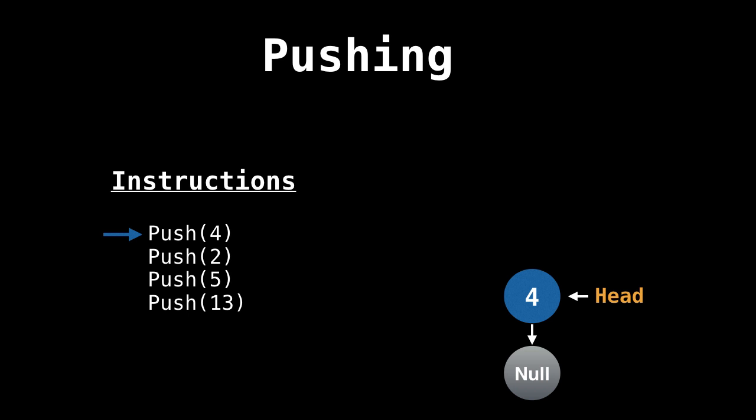The trick to creating a stack using a singly linked list is to insert the new elements before the head, and not at the tail of the list. This way, we have pointers pointing in the correct direction when we need to pop elements off the stack.